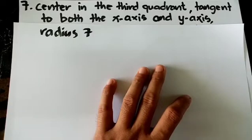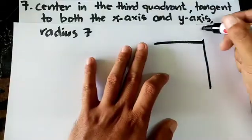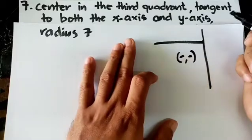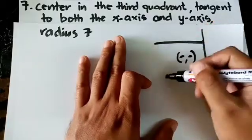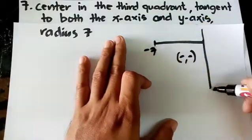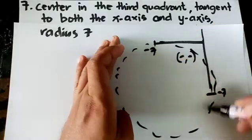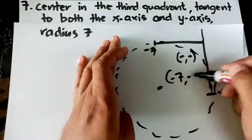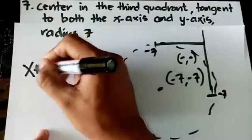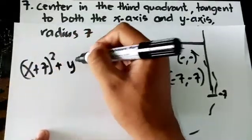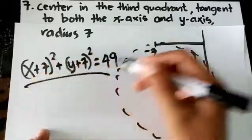Number 7: center in the third quadrant, tangent to both the x-axis and y-axis, radius 7. In the third quadrant, both coordinates are negative. Since it's tangent to both axes and the radius is 7, the center must be at (-7, -7). The answer is (x+7)² + (y+7)² = 49.